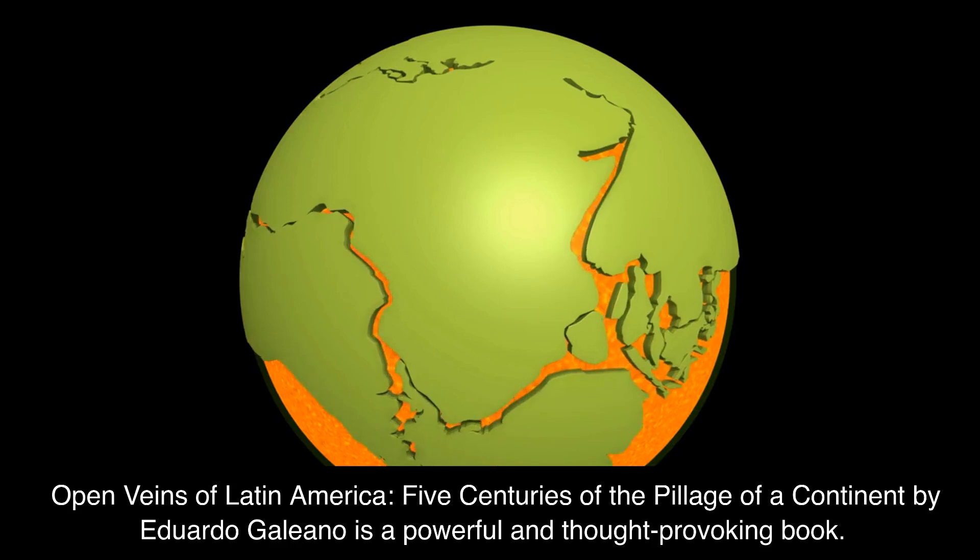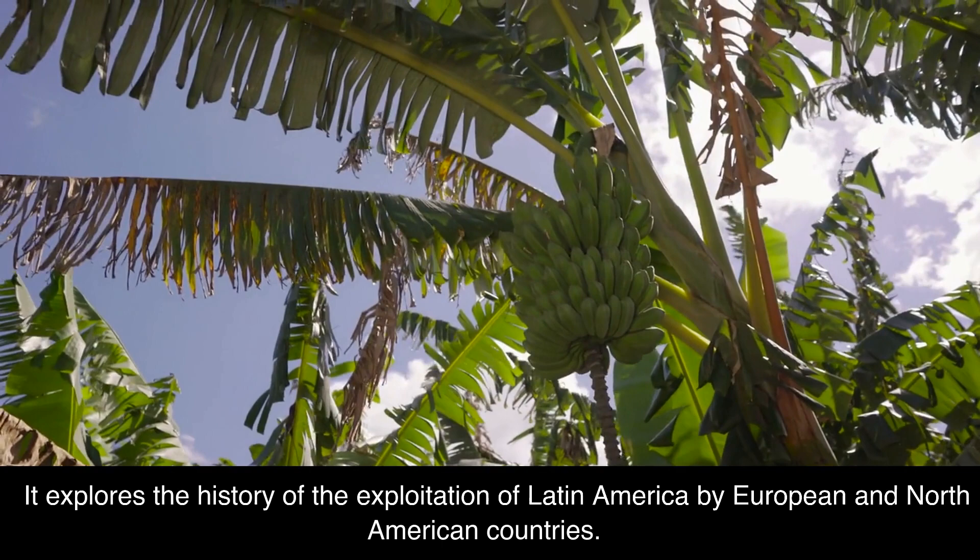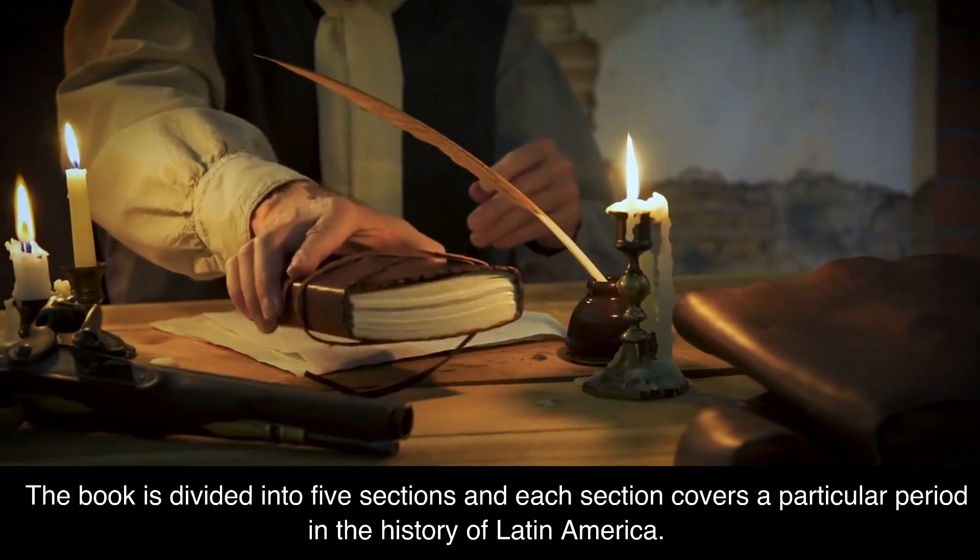Open Veins of Latin America: Five Centuries of the Pillage of a Continent by Eduardo Galeano is a powerful and thought-provoking book. It explores the history of the exploitation of Latin America by European and North American countries. The book is divided into five sections, and each section covers a particular period in the history of Latin America.